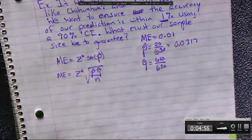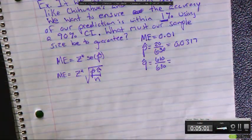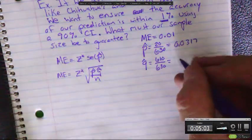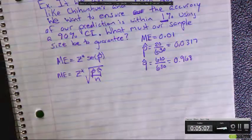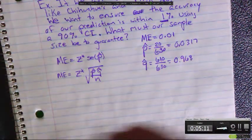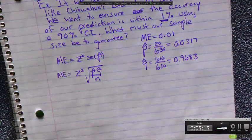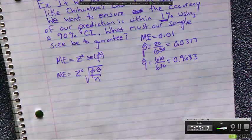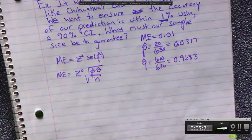Now we're dealing with the number of people, but it's the number of people that belong to a group. If you work this out, it gives you 0.9683 if you round. Those two should add up to 1, which they do. So we've got p hat, we've got q hat.